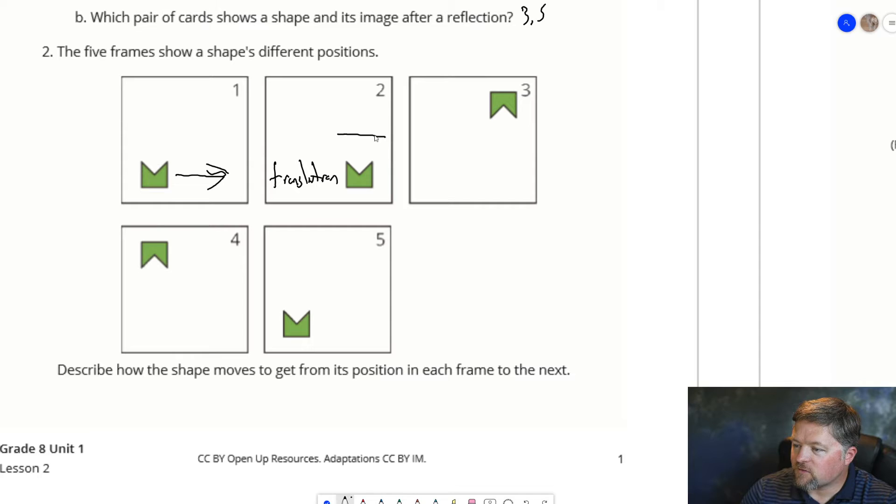2 to 3: Well, that was flipped over this line, which is a reflection. 3 to 4: Moves it over that way, which is a translation.